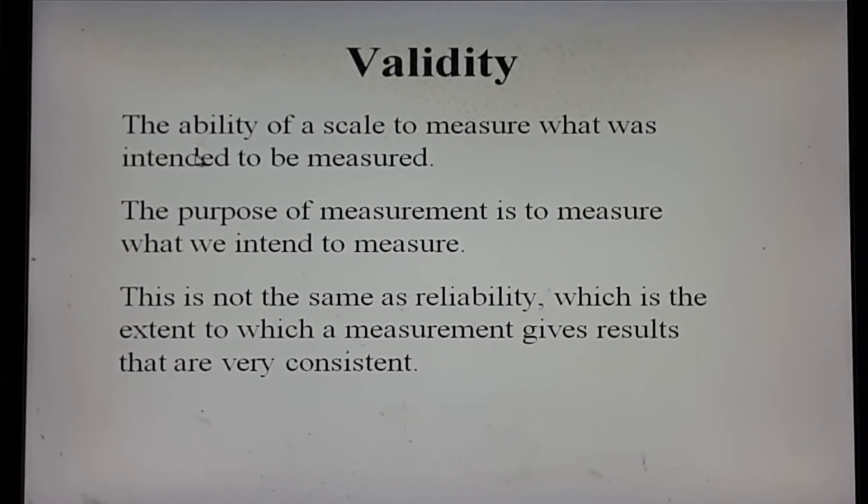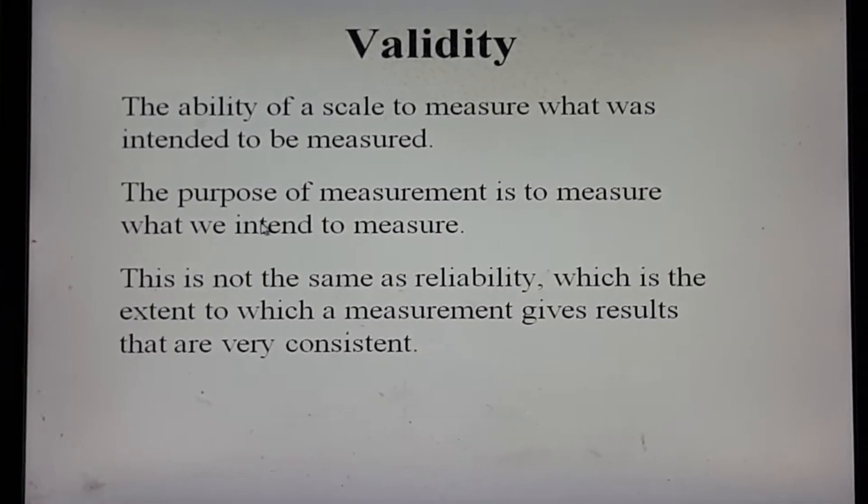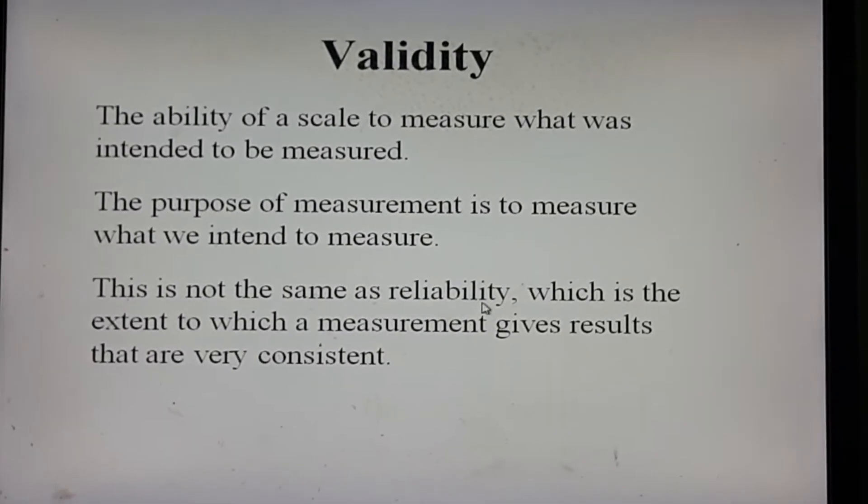Now we shall discuss validity of measurement. What is validity? Validity means the achievement of the target — if the measurement can achieve the target, or is designed in such a way that it will be able to identify the results, then it is called valid. Validity is the ability of a scale to measure what was intended to be measured. The purpose of measurement is to measure what we intend to measure.